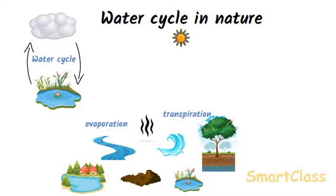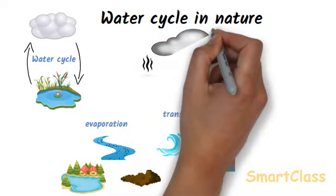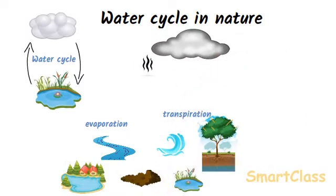The air containing water vapour is heated by the sun. Hot air, being lighter, rises high in the sky. It is cold at high altitude, so this water vapour gets cooled as it reaches high altitude and forms tiny droplets of water to form clouds. The tiny droplets join together to form larger water droplets, which then fall on the earth in the form of rain.